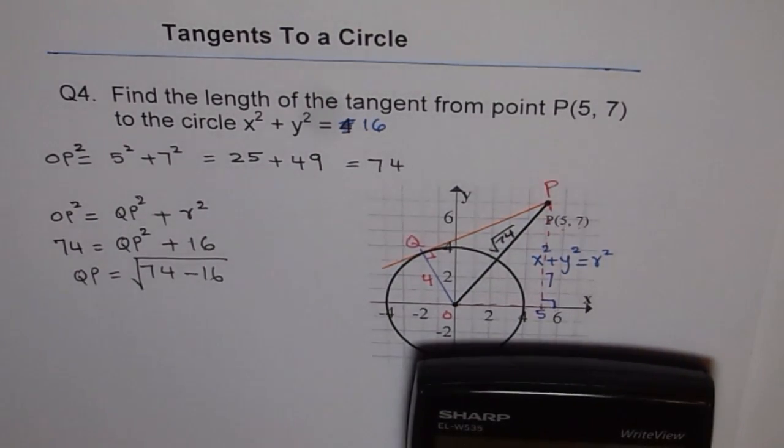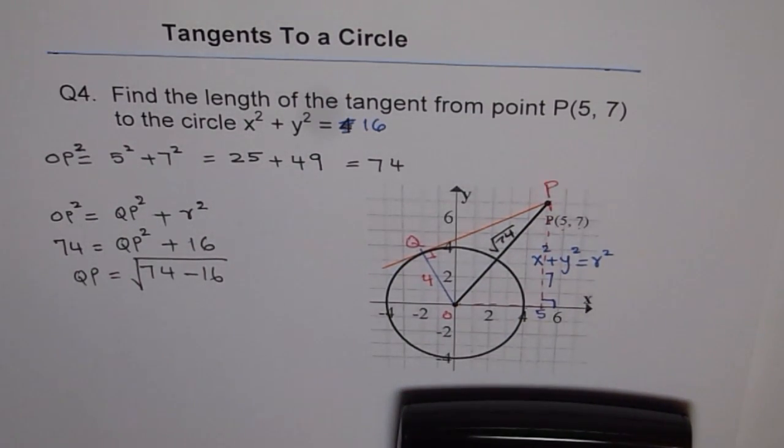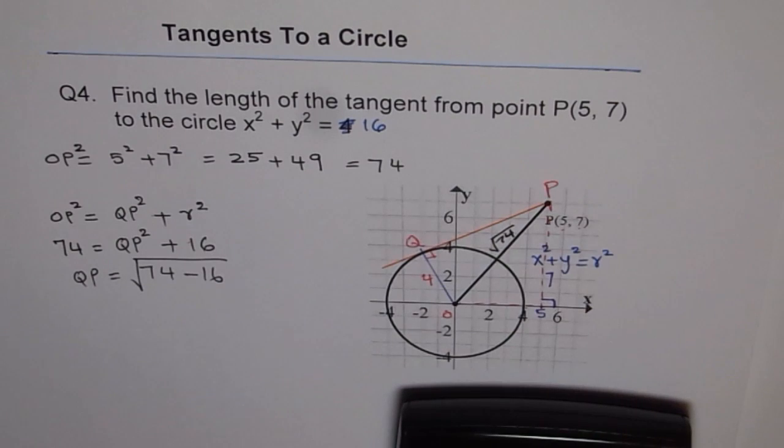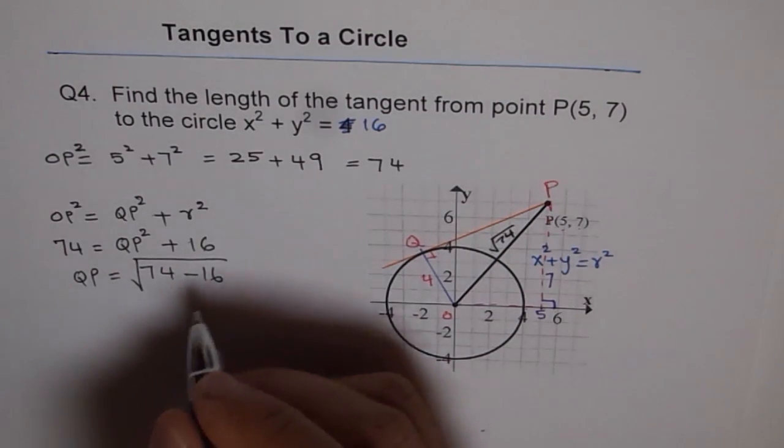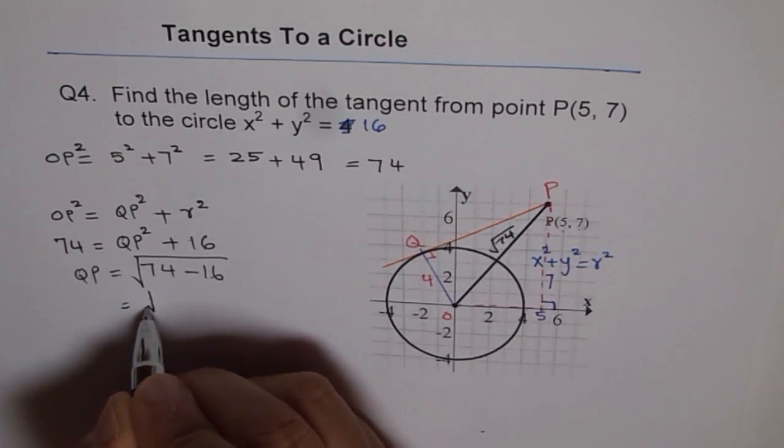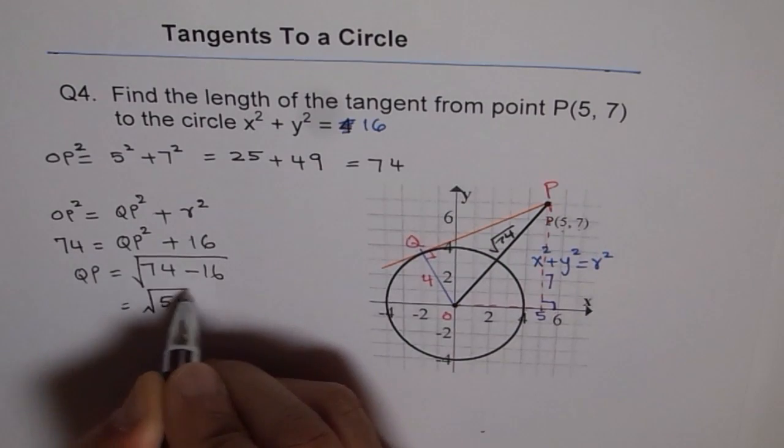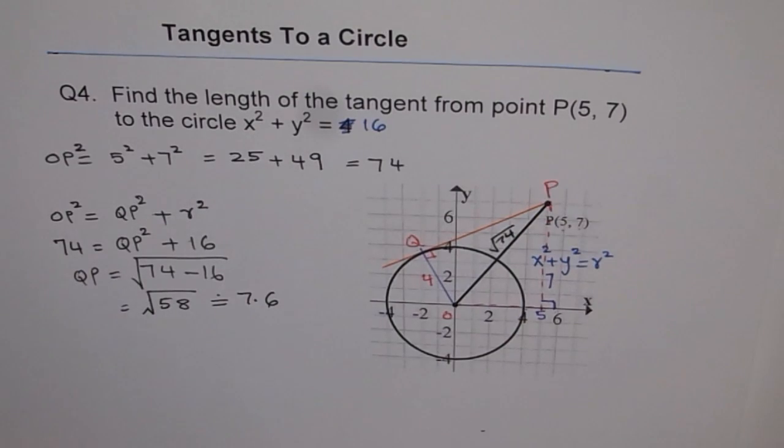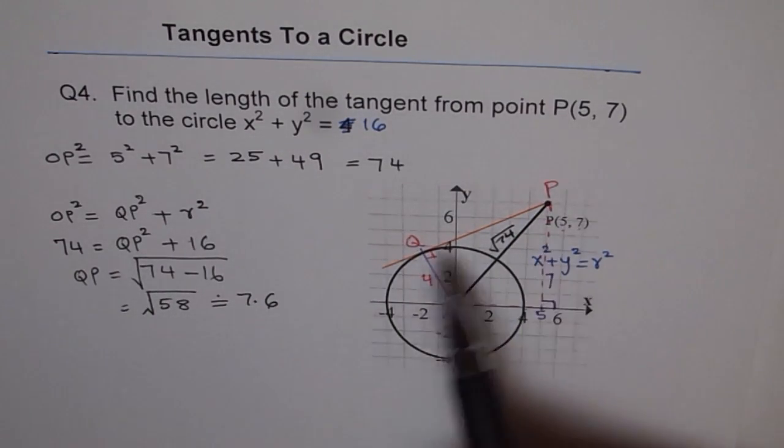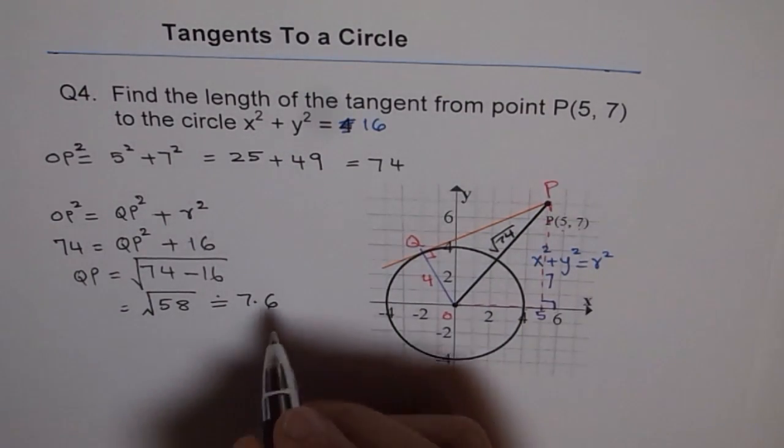We can always use our calculator and figure it out. So it is 74 minus 16, which equals 58, and square root of 58 gives us 7.61. So that is √58, which is approximately 7.6. So we get QP as 7.6 units.